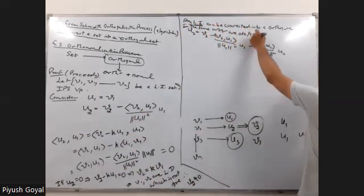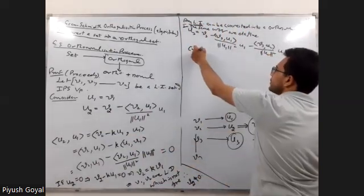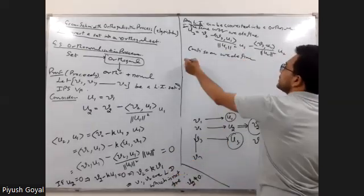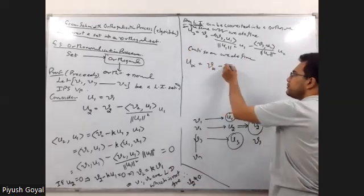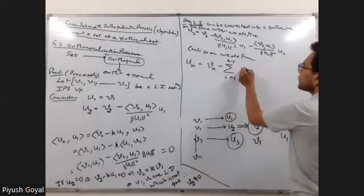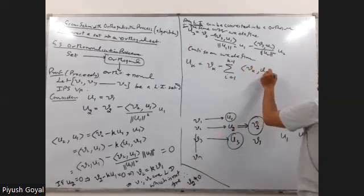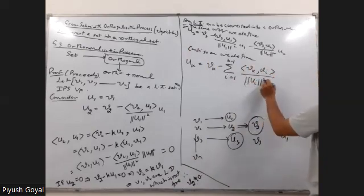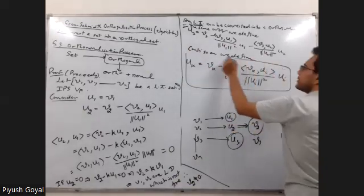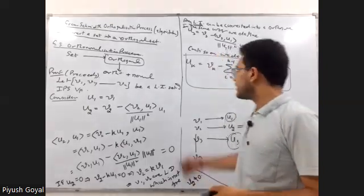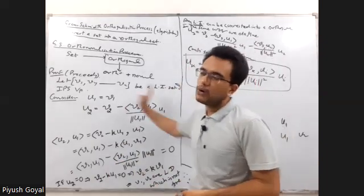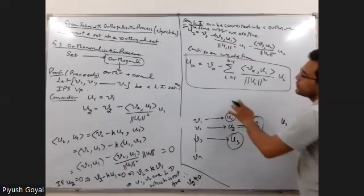In the same way, we define U3, and continuing so on, the general formula is: Uk = Vk minus the summation from i=1 to k-1 of (⟨Vk, Ui⟩ / ‖Ui‖²) · Ui. This element will be non-zero and orthogonal to all previous elements U1, U2, up to Uk-1.